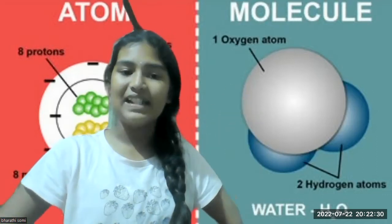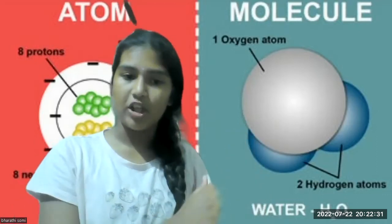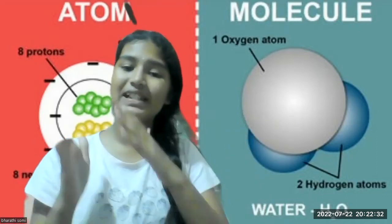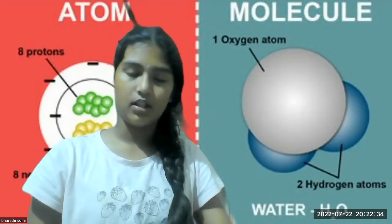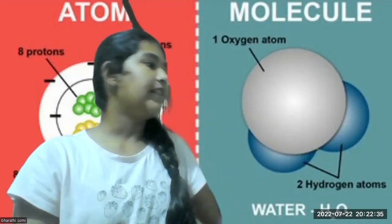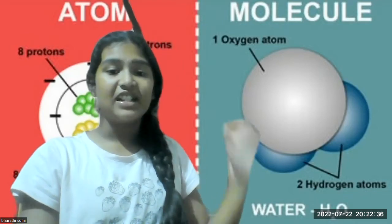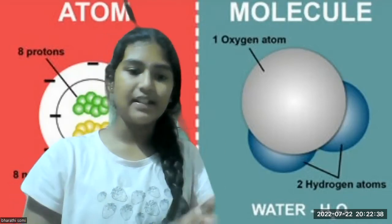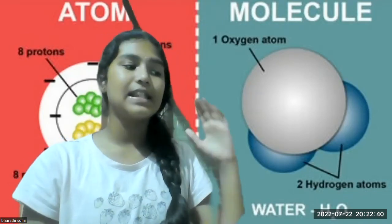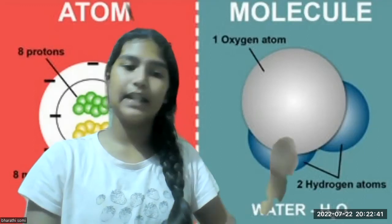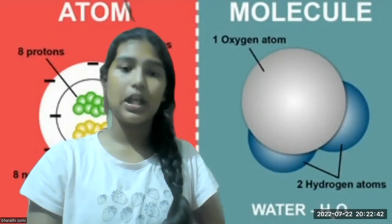Matter is made up of molecules. When we talk about matter, there are three types: solid, liquid, and gas. The scientific definition of matter is something which has mass and occupies space.